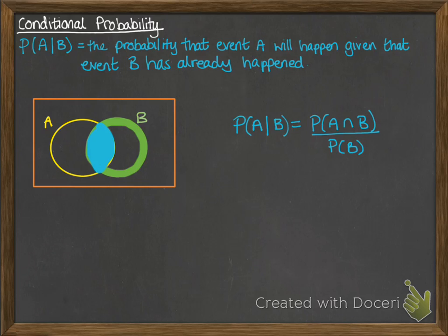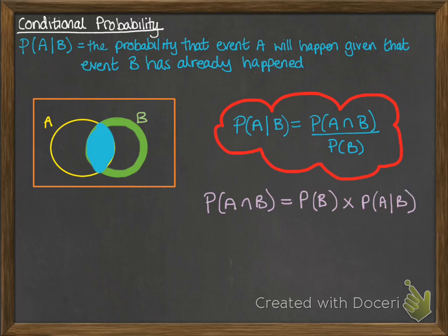So it's just that intersection of A and B, but we're looking at it as a proportion of B only, because we've restricted it down to B happening — as a probability out of that B circle. That gives us the important formula for conditional probability. It can also be rearranged, giving an alternative form where we express the probability of A and B when a conditional probability is involved.